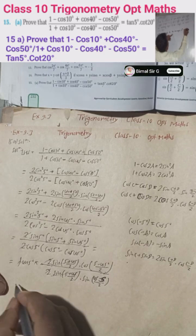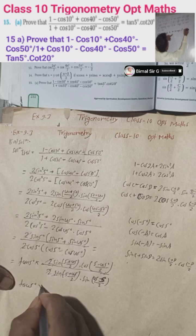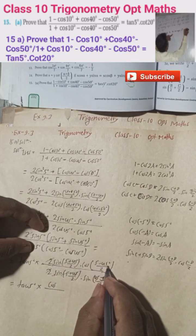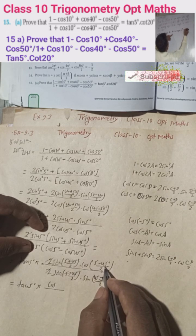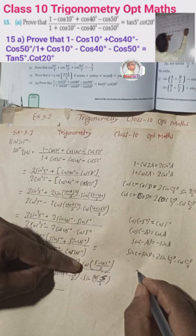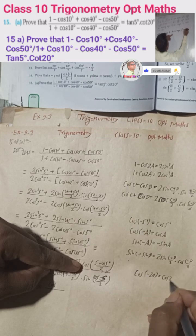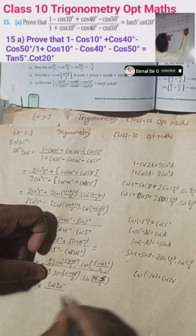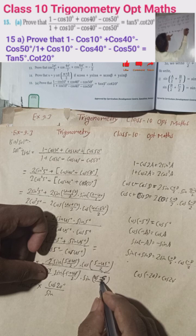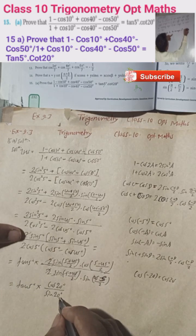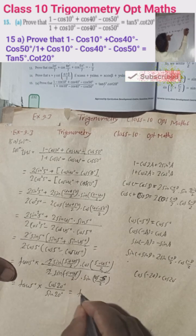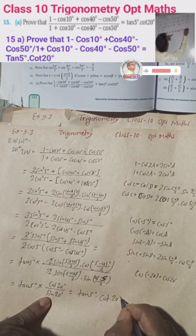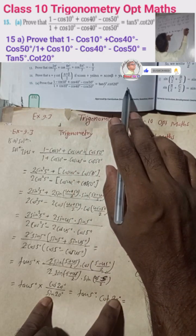After cancellation, we are left with: cos((5-45)/2) / sin((45-5)/2) = cos(-20°) / sin(20°) = cos20° / sin20°. The numerator also has sin5°/cos5° = tan5°. So the whole expression equals tan5° · (cos20°/sin20°) = tan5° · cot20°, which equals RHS. Proved.